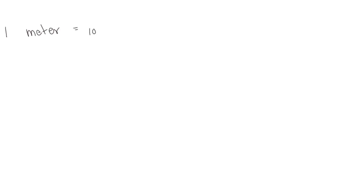We know that one meter is equal to a hundred centimeters, so we could represent a centimeter as a fraction of a meter. One one-hundredth of a meter is a centimeter. We can also write hundredths in decimal form, just as we did with tenths. So one one-hundredth would be zero — to show there are no whole numbers — then a decimal point, no tenths, but one hundredth. So one hundredth in decimal form is the same as one hundredth in fraction form.